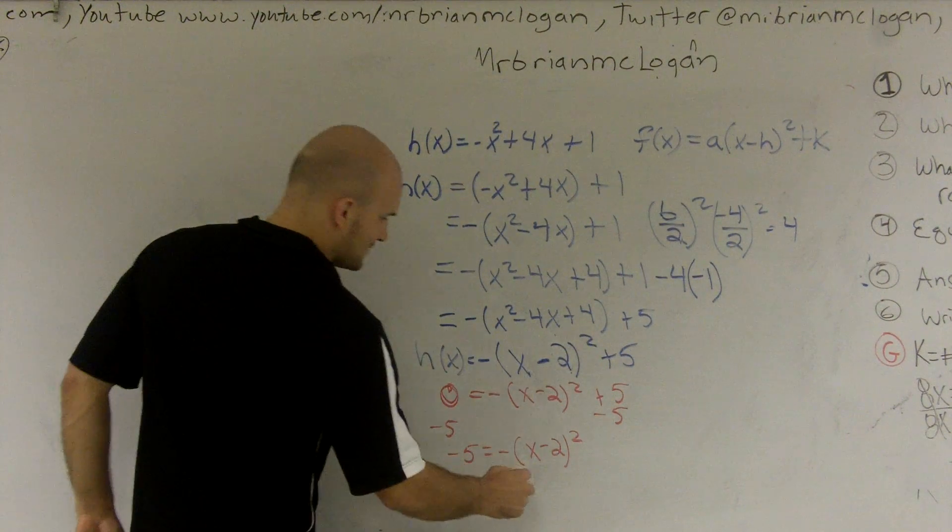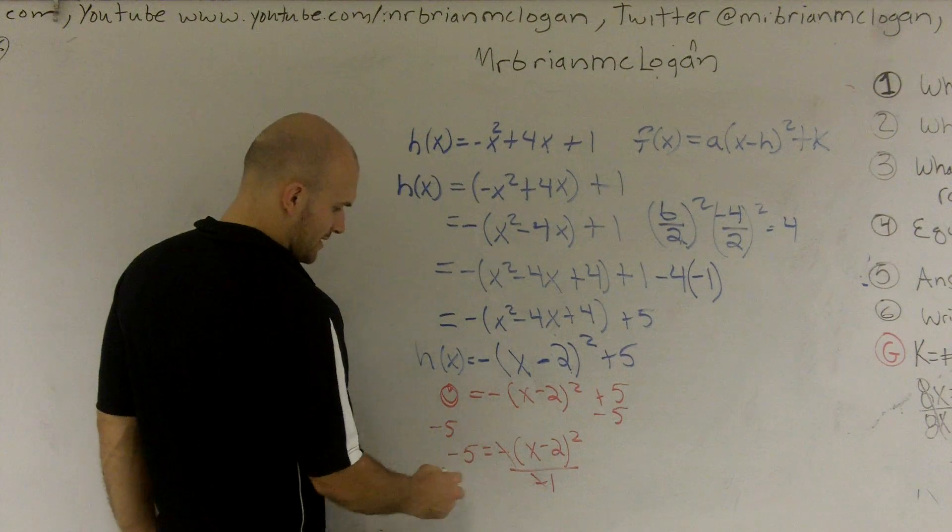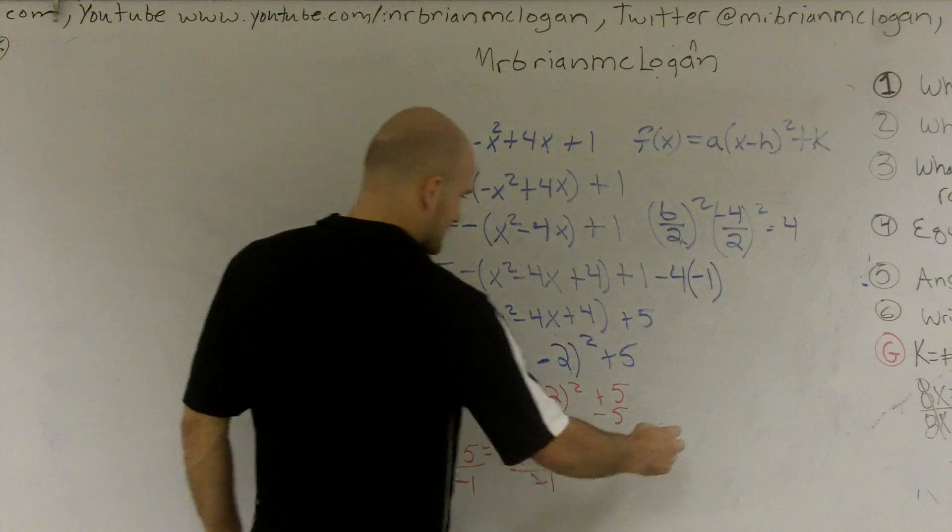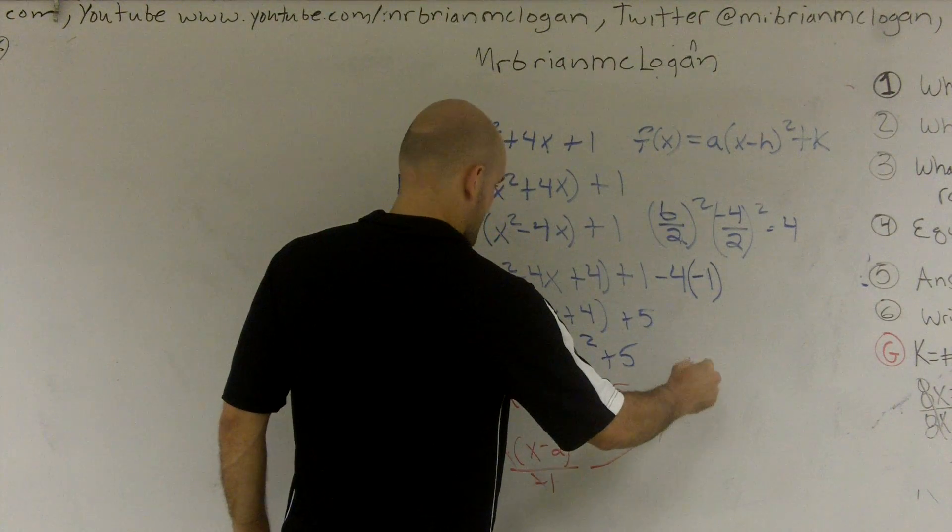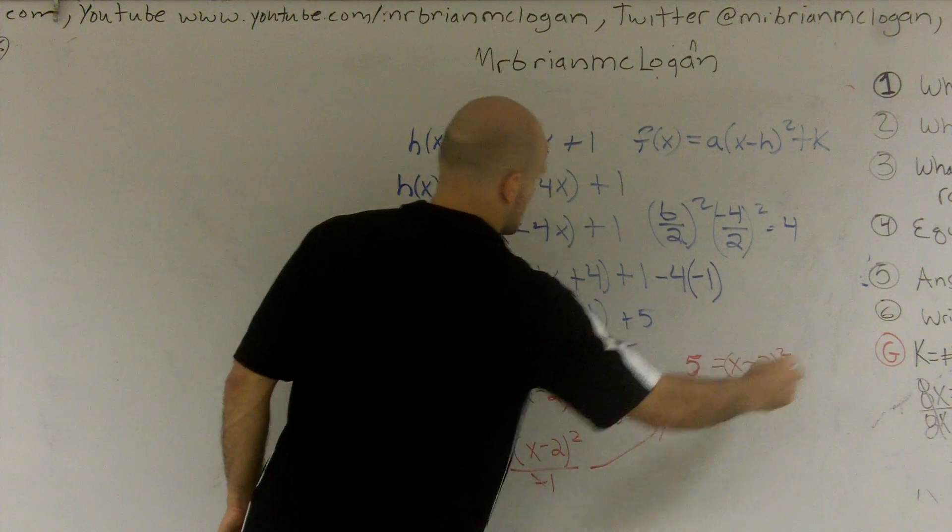Before I can take the square root, I have to divide by negative 1. Why? Because I've got to get rid of that negative right there. So therefore, that leaves me a positive 5 equals x minus 2 squared.